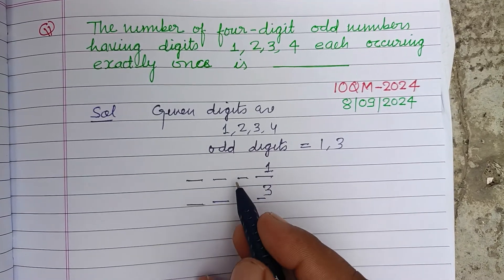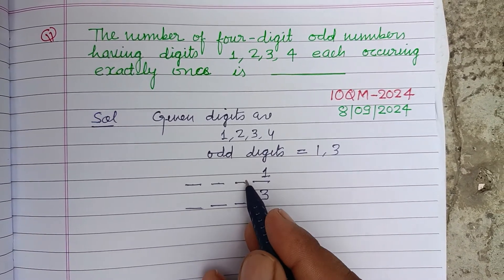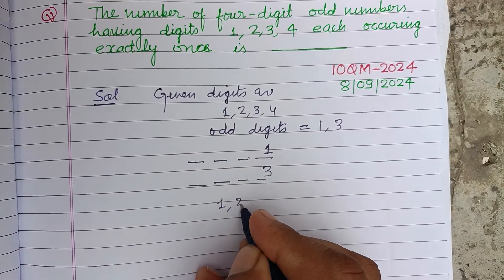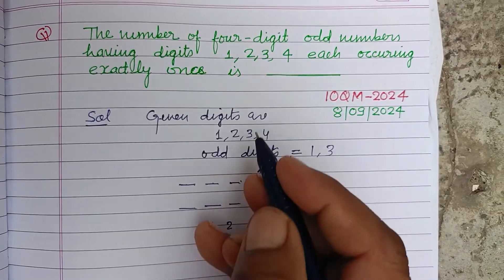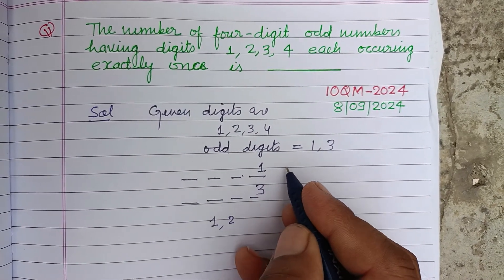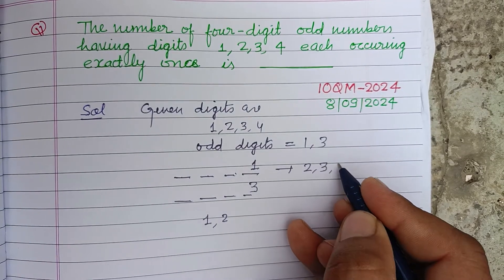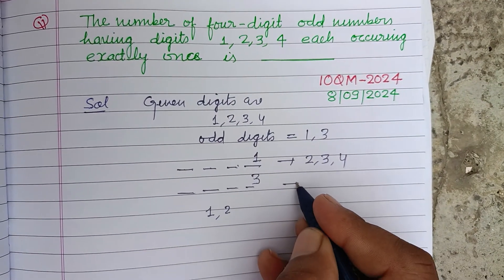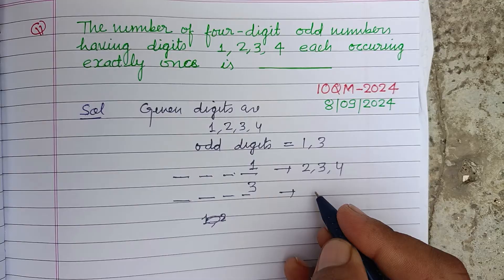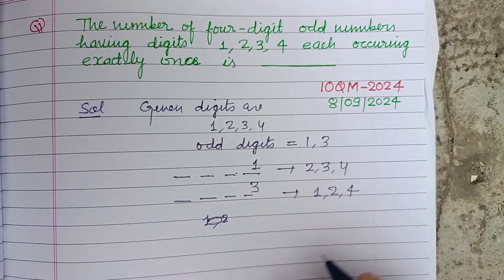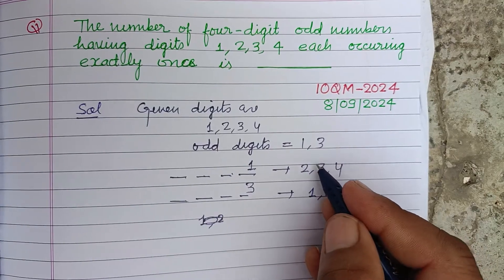Now we have three vacant places which can be filled by three numbers. For the first case, we have 2, 3, 4, and for the second case, we have 1, 2, and 4. These cannot be repeated.